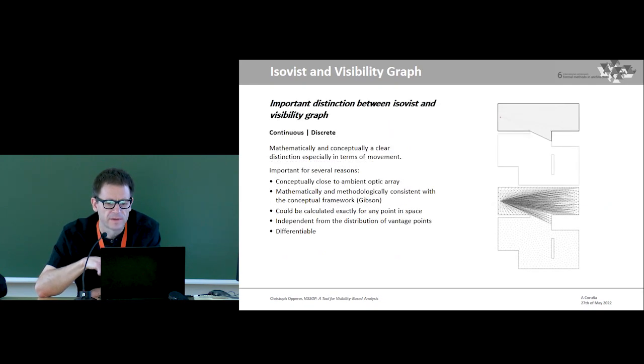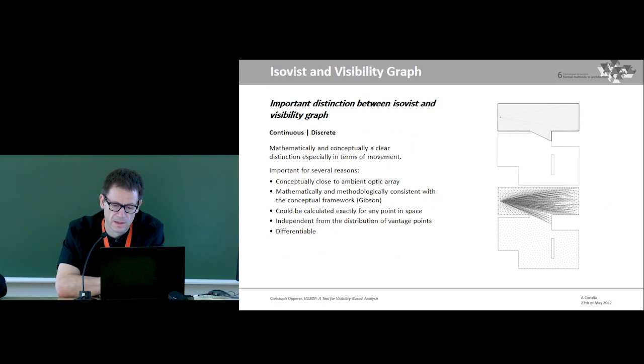One important distinction between ISOVIST and visibility graph is that the ISOVIST is conceptually and mathematically a continuous approach. Whereas visibility graph is inherently discrete. Practically this distinction is mostly negligible, but on the conceptual level there's a big difference, especially when we put it into the context of Gibson's theory of ecological perception, which is the theoretical background of ISOVIST. But I'm not going to talk about this because it's outside of the time constraint and it's a huge and wide and also very dangerous field for all kinds of discussions.